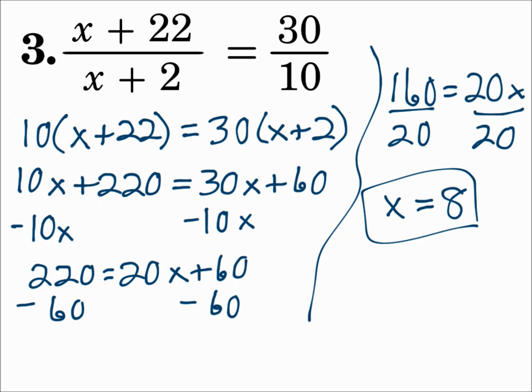Just remember, when you have a quantity like x plus 22 or like x plus 2, remember to put those in parentheses when you cross multiply. Because it's the 10 times the whole x plus 22. And it's 30 times the whole quantity x plus 2.